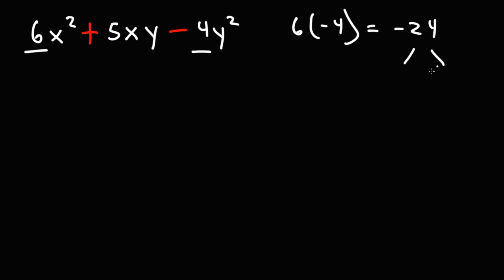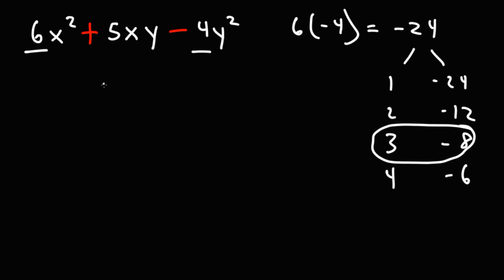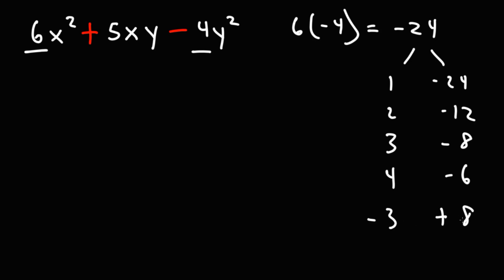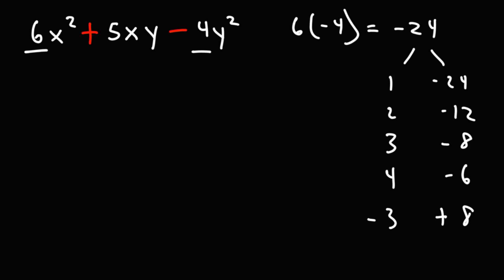Let's go in order. Dividing negative 24 by 1 gives negative 24; by 2 gives negative 12; by 3 gives negative 8; by 4 gives negative 6. Adding them: 1 + (−24) = −23; 2 + (−12) = −10; 3 + (−8) = −5, not positive 5. Reversing the signs: negative 24 divided by negative 3 gives positive 8. So negative 3 times 8 is negative 24, and negative 3 plus 8 equals 5. That's the pair we want.